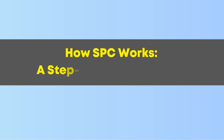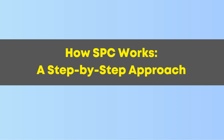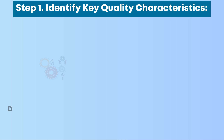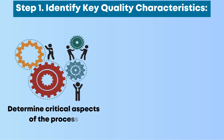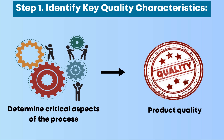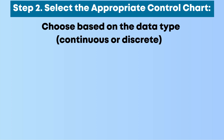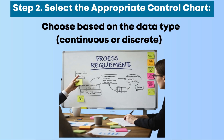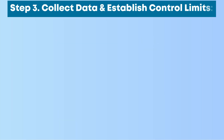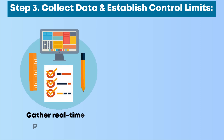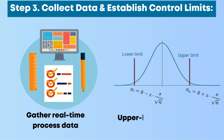How SPC Works — A Step-by-Step Approach. Step 1: Identify key quality characteristics — determine the critical aspects of the process that impact product quality. Step 2: Select the appropriate control chart — choose based on the data type, that is, continuous or discrete, and process requirements. Step 3: Collect data and establish control limits — gather real-time process data and define upper and lower control limits.